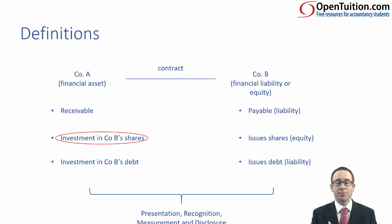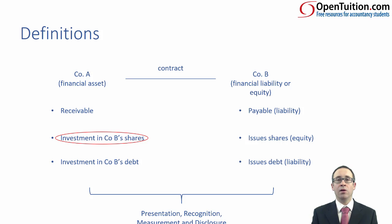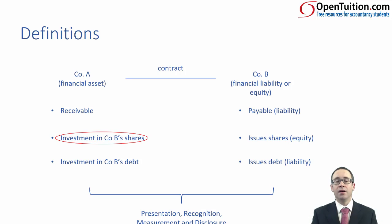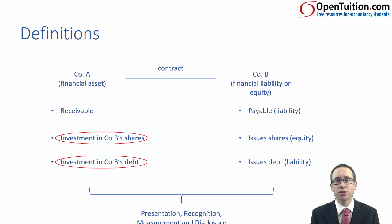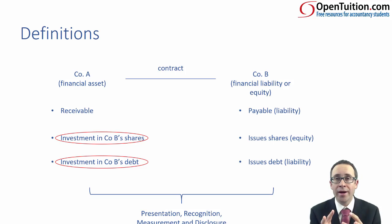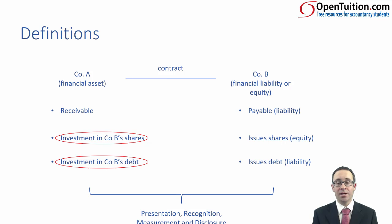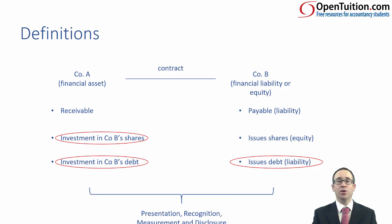For the investment in company B's shares, you credit the bank and debit your financial asset. As we covered at F7, items can be classified as fair value through profit or loss, or fair value through other comprehensive income. We also need to consider your investment in company B's debt — measured at amortised cost, where we look at the coupon rate and incorporate substance by using the effective rate of interest to work out interest income. The flip side is your financial liability on the issue of debt, which is also measured at amortised cost.